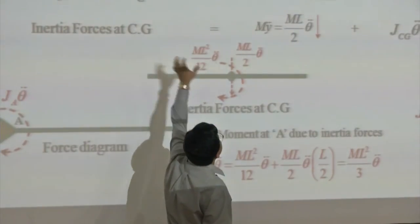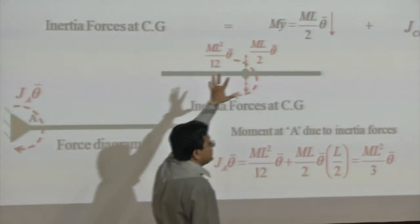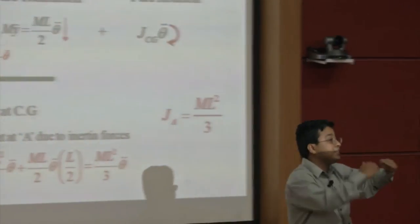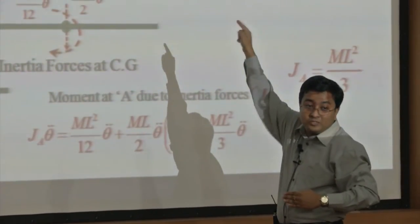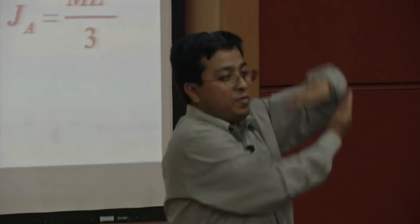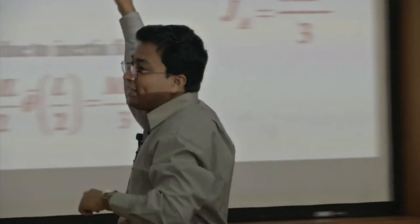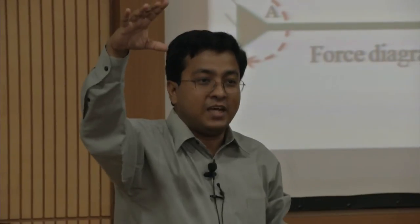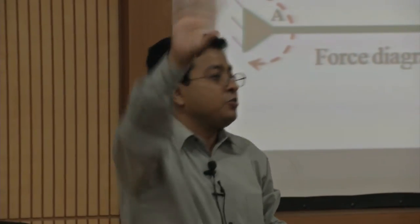That is M·L²/12·thetä for the total bar length L. The body undergoes pure translation — that is L/2 times theta for the center — plus rotation about its own mass center, giving M·L²/12·thetä. The equivalent system transfers this moment to point A. You must be consistent with the constraint at the left end.